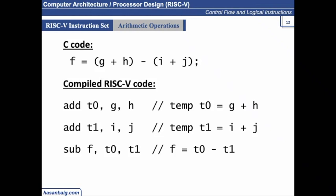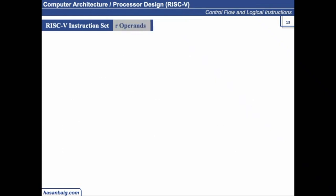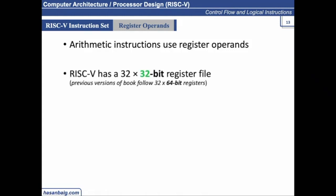It does not mean we have infinite possible locations in the computer to store those values. There are specific locations where we can store, and for arithmetic operations, we have a smaller memory called register where we store these values. So RISC-V has 32 times 32-bit register file, which means there are 32 such locations where we can store a value of up to 32 bits.